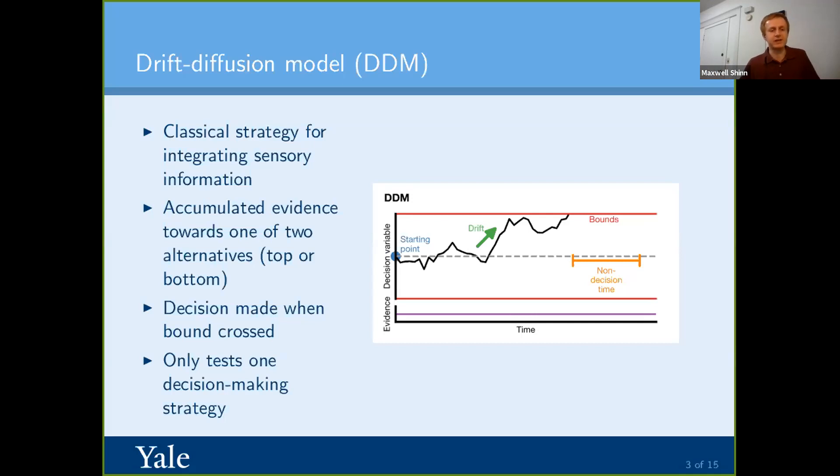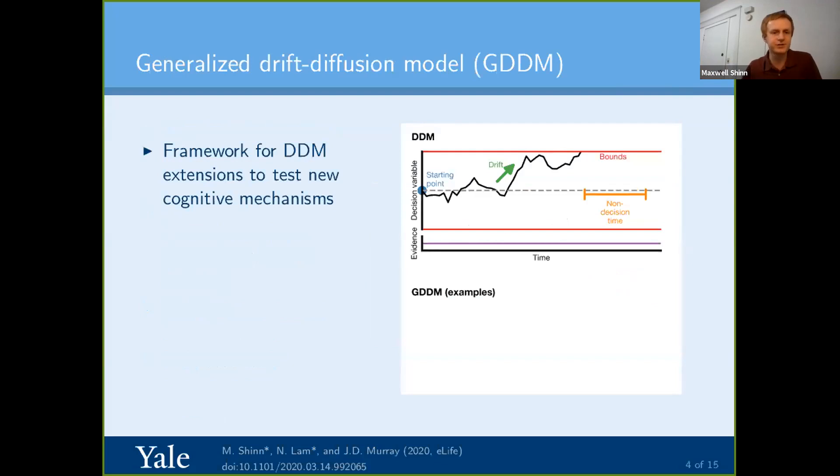And what we're more interested in is testing a bunch of different strategies. And so in order to do that, we develop this generalized drift diffusion model. And the concept behind this is we take all of these parameters that I discussed before, like the starting point, the drift rate, the non-decision time, we take all of those parameters and we turn them into functions, either functions or distributions, functions that output distributions. And as a result of that, this flexibility allows us to simulate a ton of different strategies that even go beyond integration.